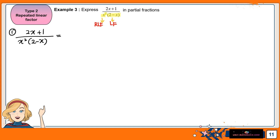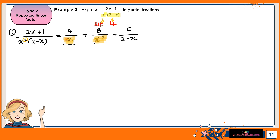Let's rewrite them separately. Because we have x to the power of 2, we separate it into increasing powers: starting with x to the power of 1, then x to the power of 2 — so you have x and then x². Last, we add the (2 − x) term. At the numerators, just use A, B, C. This only applies for repeated linear factors.